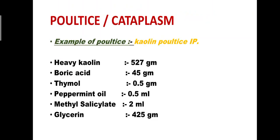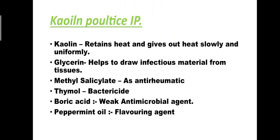Example of poultice: Kaolin Poultice IP. Contents: heavy kaolin 50–70 g, boric acid 4.5 g, thymol 0.5 g, peppermint oil 0.5 mL, methyl salicylate 2 mL, and glycerin 4–7 g.